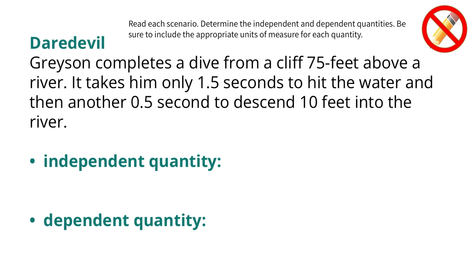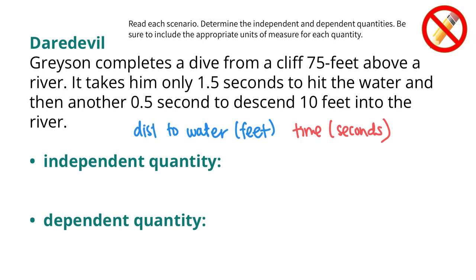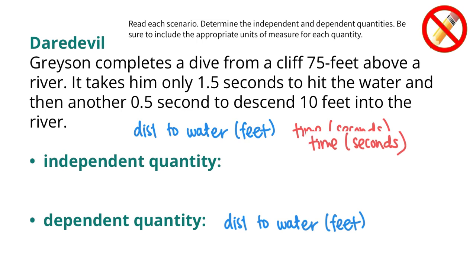For each of these, we're going to determine the independent and dependent quantities and include the appropriate units of measure. The first problem is called Daredevil: Grayson completes a dive from a cliff 75 feet above a river, taking 1.5 seconds to hit the water and another 0.5 seconds to descend 10 feet into the river. The two quantities are distance to the water, measured in feet, and time, measured in seconds. Distance to the water will depend on the amount of time elapsed, so distance is the dependent quantity and time in seconds is the independent quantity.